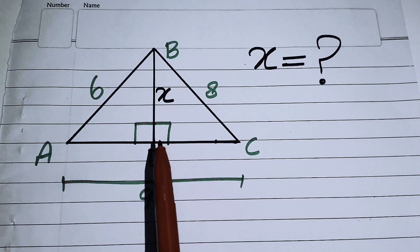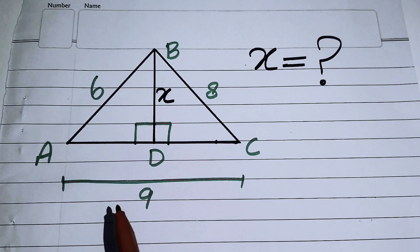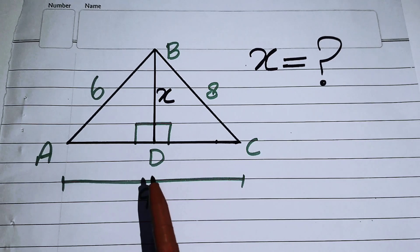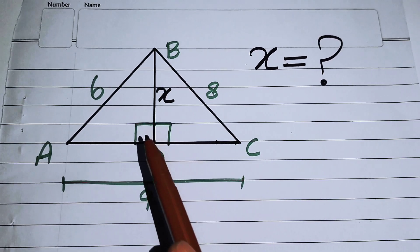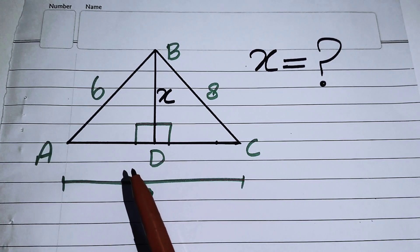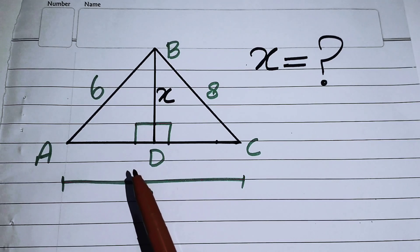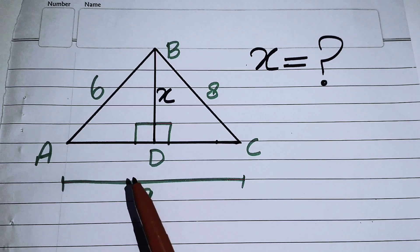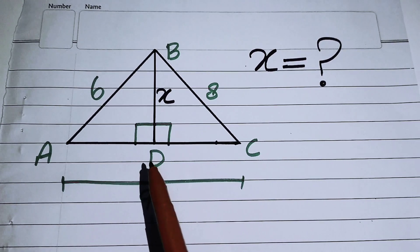We will find this length of the median by using the Apollonius theorem. The Apollonius theorem states that for any triangle, the sum of the squares of any two sides equals the square on half the third side together with twice the square on the median which bisects the third side.